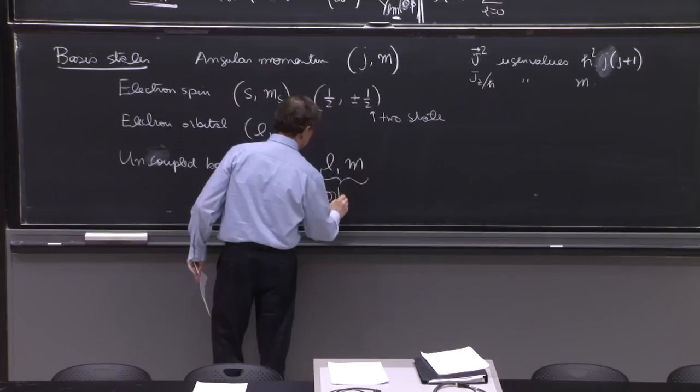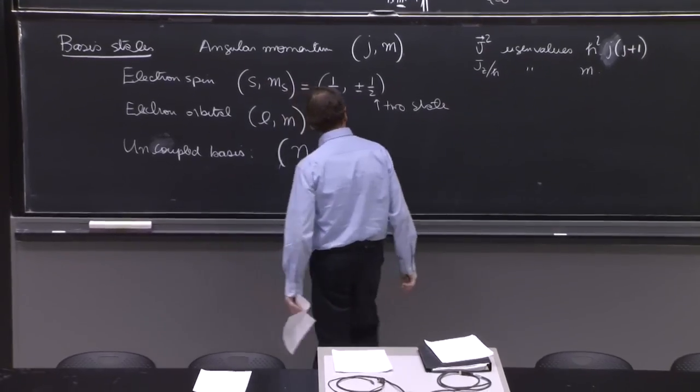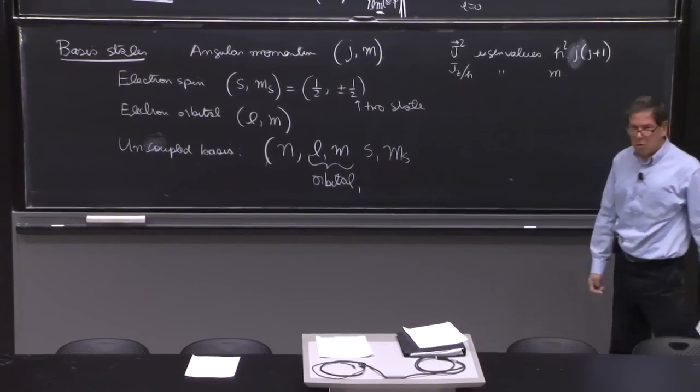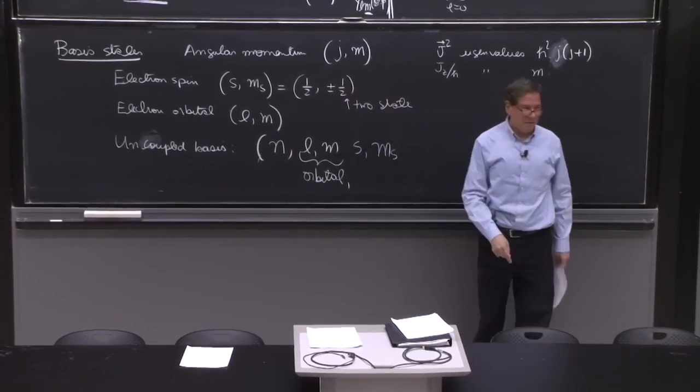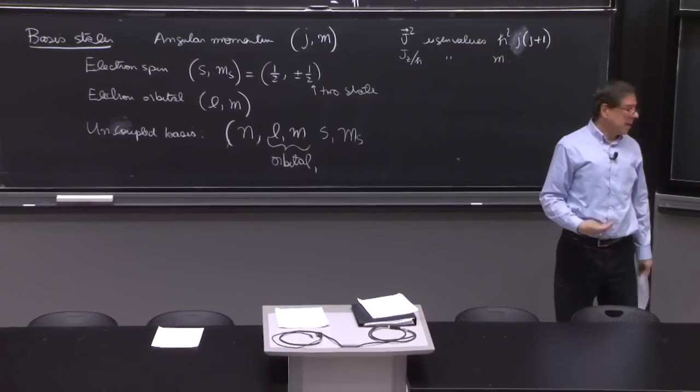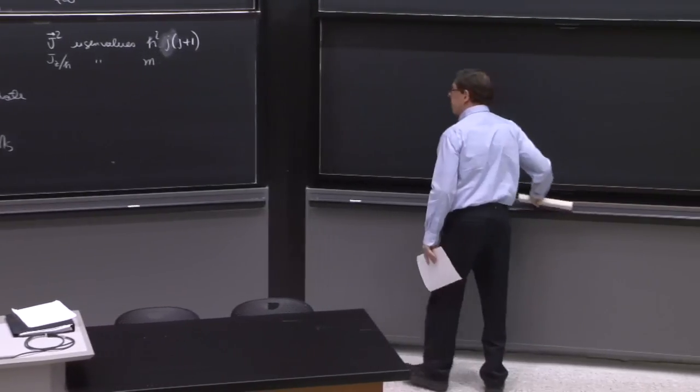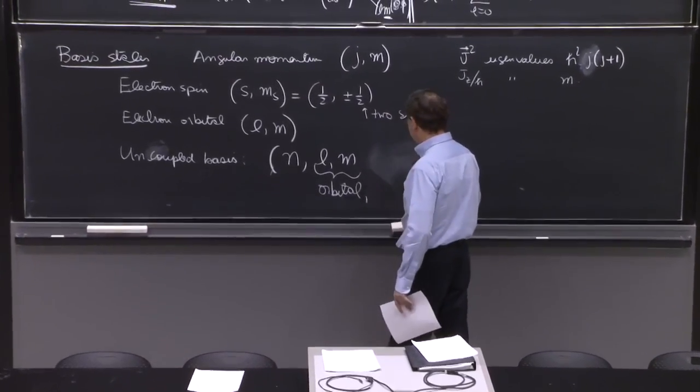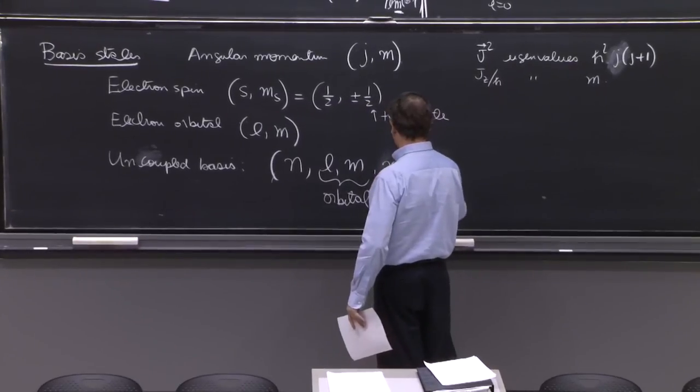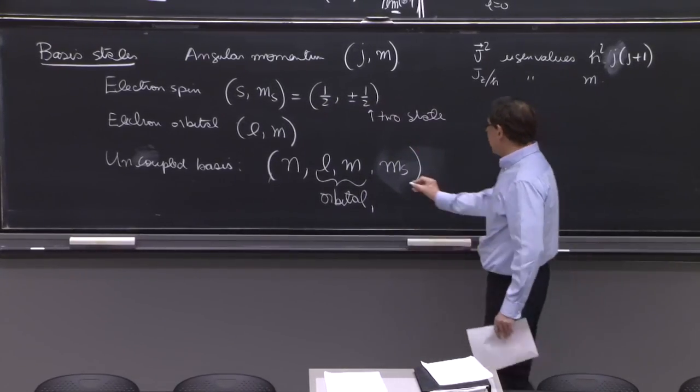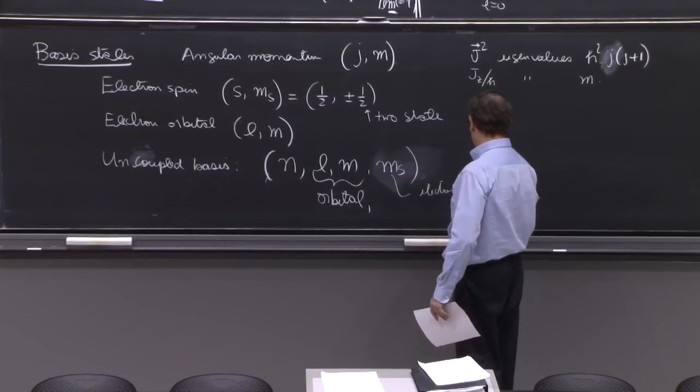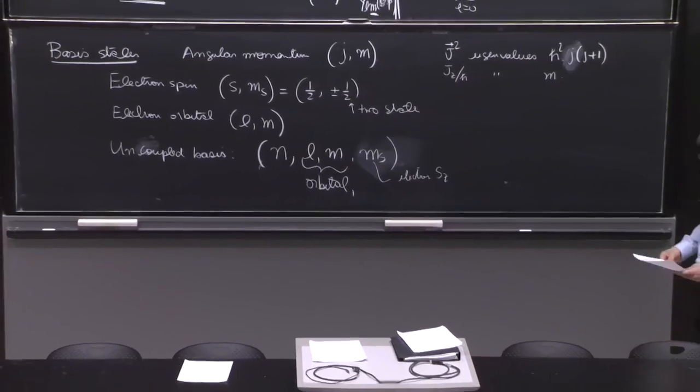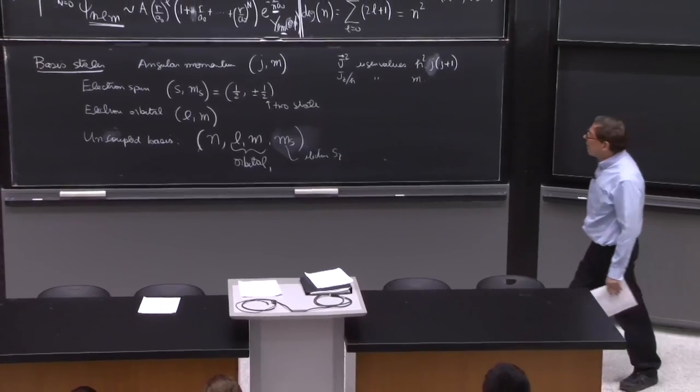This is the orbital. And you could say, well, s and ms. That would be a correct thing to do. But as we said, s is always 1 half. So copying and copying again something that is always the same value and doesn't have any new information is not worth it. So people don't include the s. And we put ms. And that's electron spin along the z direction, electron sz. And it takes values plus minus 1 half. So this is our uncoupled basis.